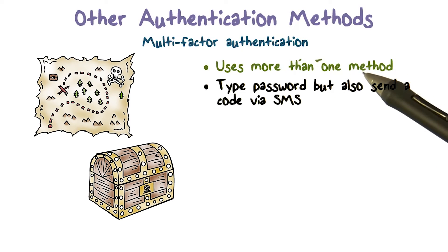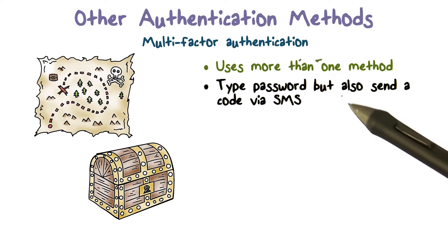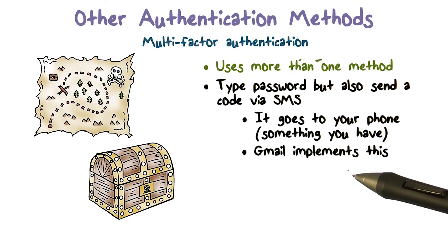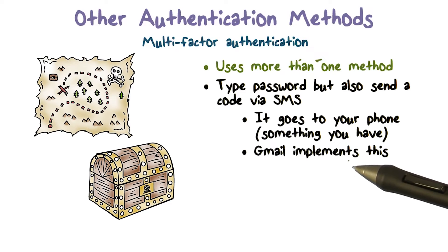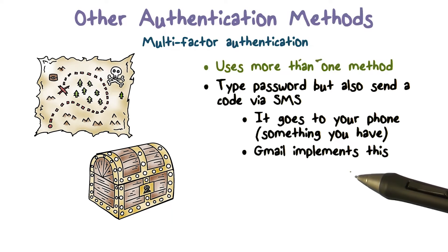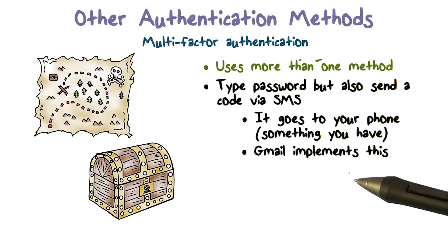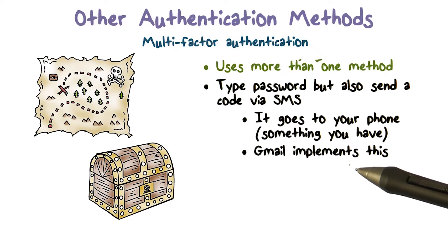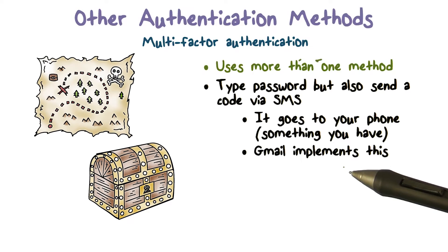We use more than one method: you type a password, but also send a code via SMS, and this code goes to your phone. Gmail, when you create an account, uses this. These are called phone verified accounts, or PVAs, mainly to provide protection against bots that create a lot of these accounts. So this is multi-factor because it's not just a password, but also a code that comes to a device that you have.